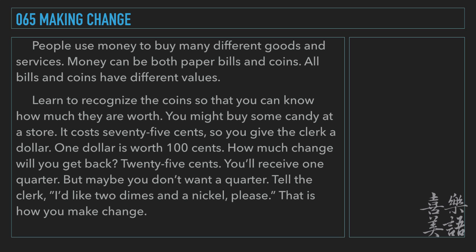You might buy some candy at a store. It costs 75 cents, so you give the clerk a dollar. One dollar is worth 100 cents. How much change will you get back? 25 cents. You'll receive one quarter.